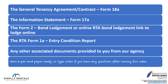You should have the following documents in front of you: the Form 18A General Tenancy Agreement contract, the RTA Form 17A information statement. Bond information will be provided to you from our agency, along with RTA lodgement links to lodge your bond online direct to the RTA, or the Form 2 bond lodgement. The RTA Form 1A entry condition report will be provided to you on or before the day you take possession of the property — usually on the day you pick up the keys. Any other associated documents from our agency will be included as well.